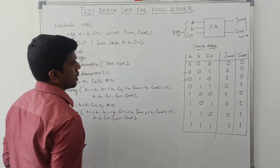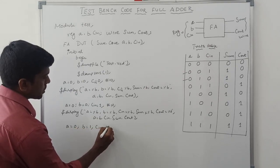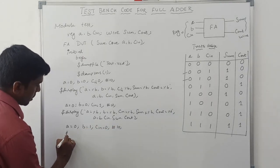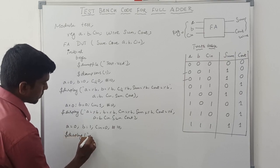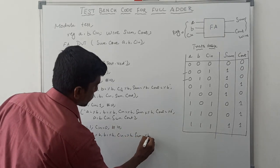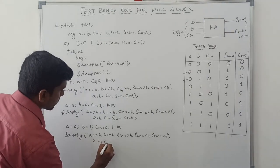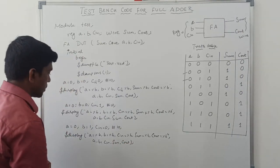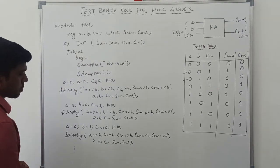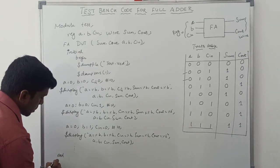For the third input, 0 1 0: a equals 0, b equals 1, c-in equals 0. After 10 nanoseconds, changing the input values, the corresponding output will display on screen. Display a, b, c-in, sum, and c-out. Likewise, mention all input values and verify the result. This continues up to the final input values 1 1 1, then 'end' to end the process, and 'endmodule'.